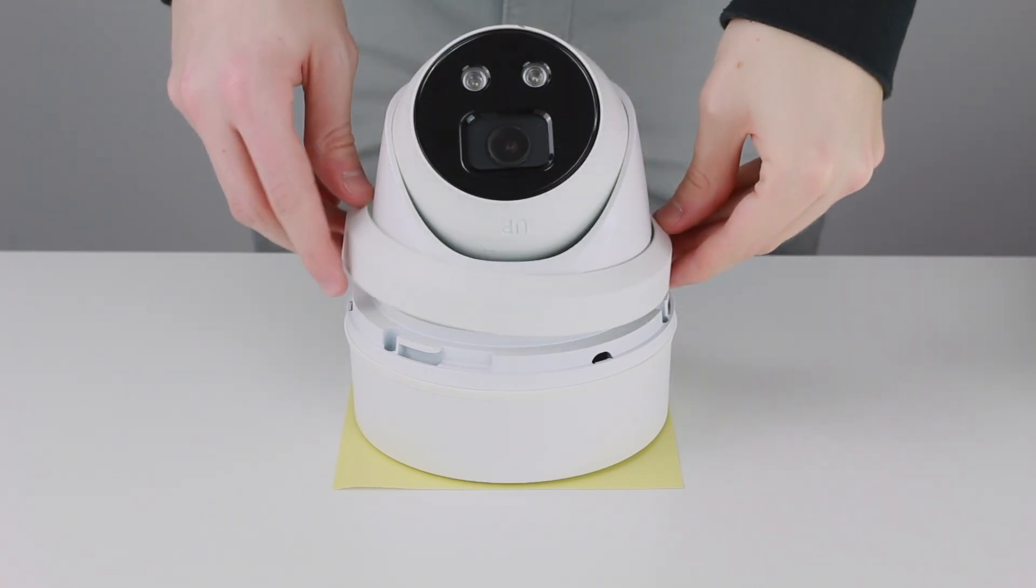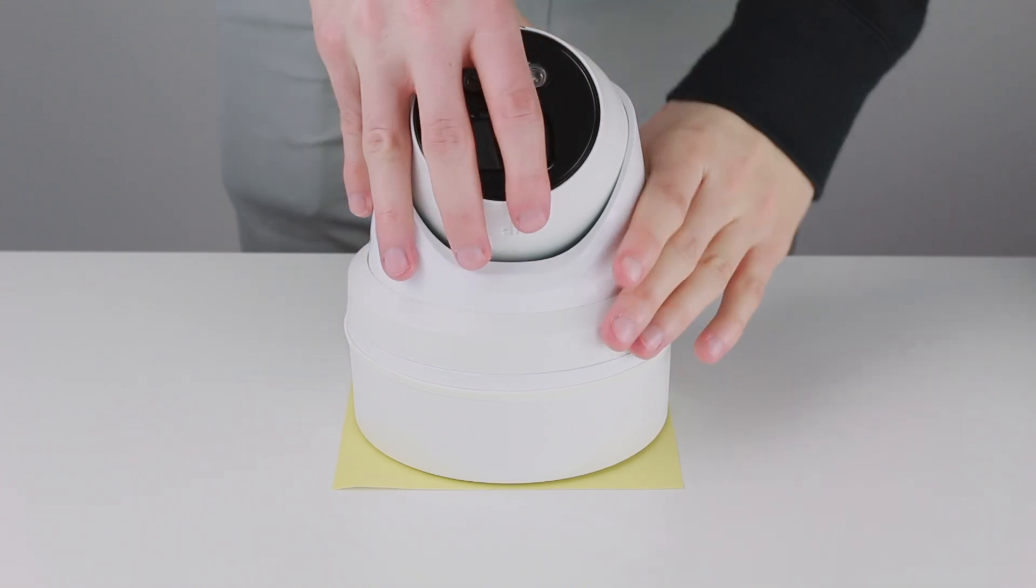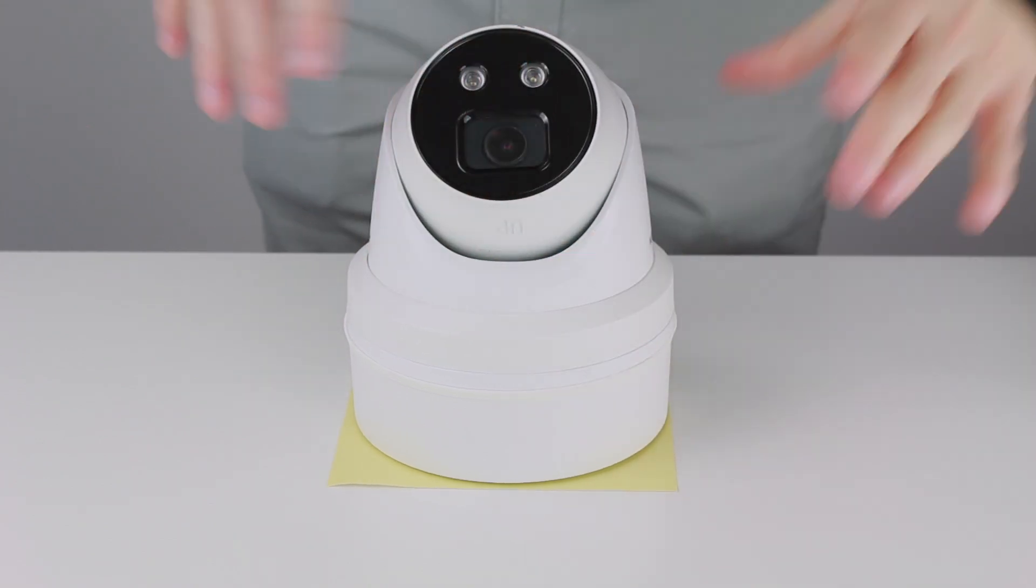With the camera secure you can place the plastic locking ring back on the camera and turn it clockwise to complete the physical installation of the camera.